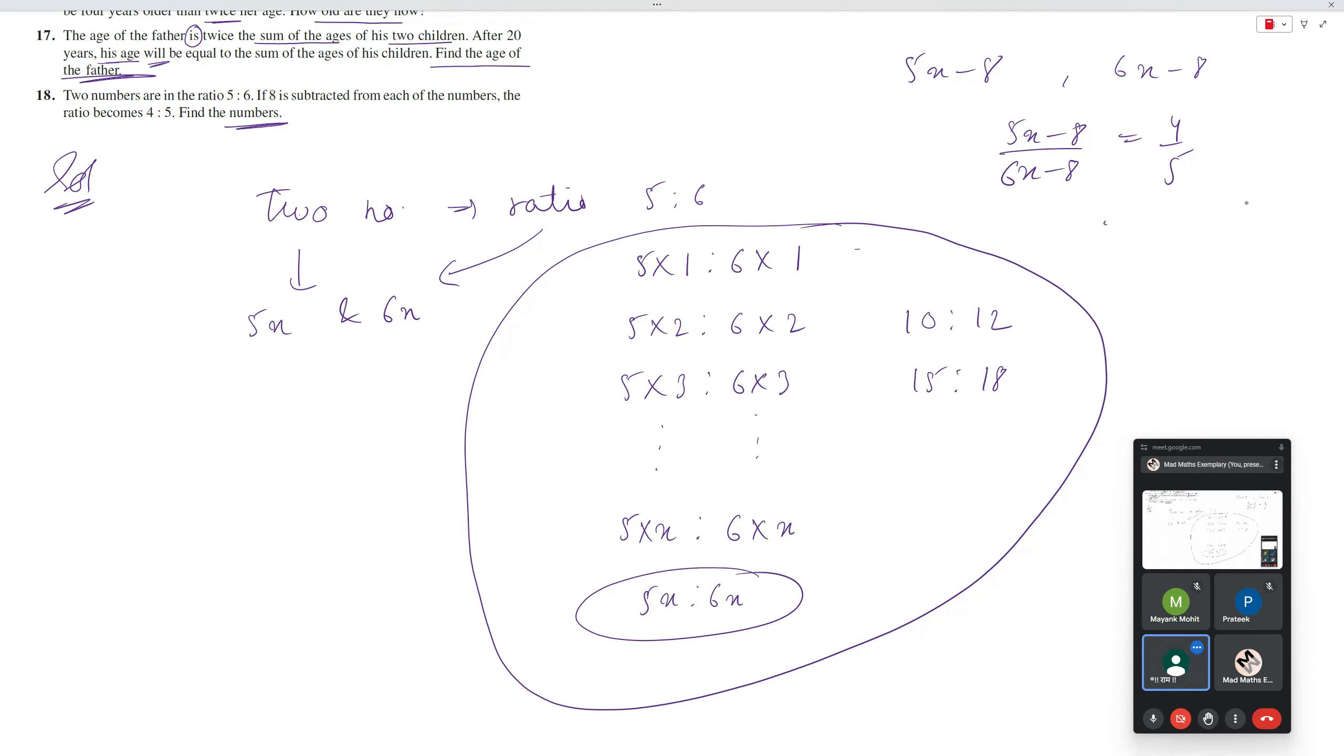Yes sir. So, 25x minus 40 is equal to 24x minus 32. So, x is equal to what? 40 minus 32, x is equal to 8. What are your numbers? 5 into 8 and 6 into 8. 40 and 48, like you have got the last solution.